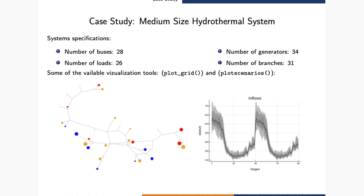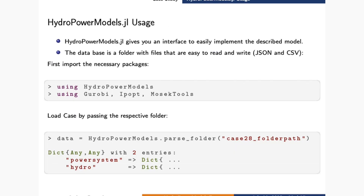Now let's see a medium-sized case study for this new framework. We have a 28-bus system, and HydroPowerModels has some visualization functions so you can see the plot of the grid and also an aggregated plot for the inflows of the reservoirs. HydroPowerModels gives you an interface to easily implement the described model. First you import the necessary packages — HydroPowerModels and the appropriate solver for your formulations — and then you are able to load the case by passing the respective folder where you have all the input files.